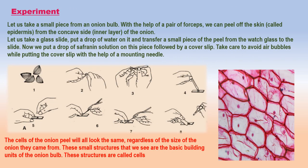Let us take an inner fleshy leaf of onion bulb. With the help of a set of forceps, we can peel off the skin, called the epidermis — it is one cell thick — from the concave side, the inner layer, of the onion. This layer can be put immediately in a petri dish or watch glass containing water to avoid the peel getting folded and dry. Put a drop of clean water on a glass slide and transfer a piece of peel. Make sure the peel is perfectly flat. Add a drop of iodine solution followed by a cover slip, and you have prepared a temporary mount of onion peel.